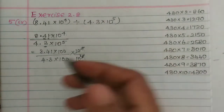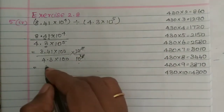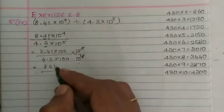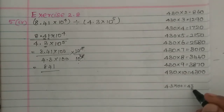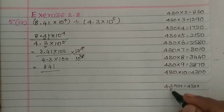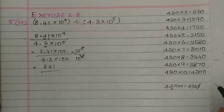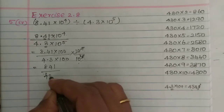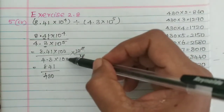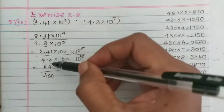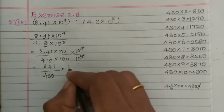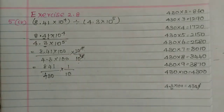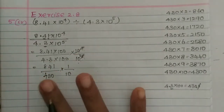Now, 8.41 into 100 is 841. And 4.3 into 100: when we move the decimal point by 2 places, 4.3 into 100 becomes 430. So now we divide 841 by 430. This will be a long division process.